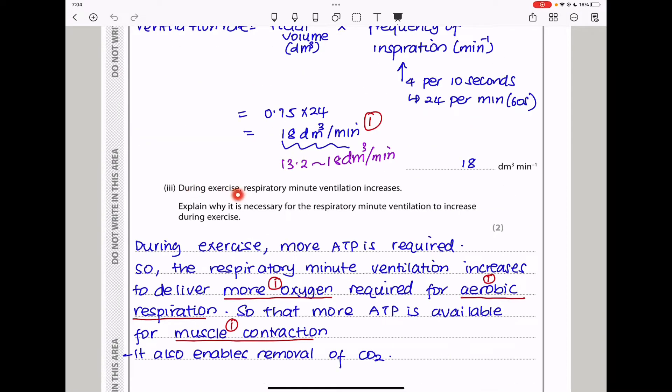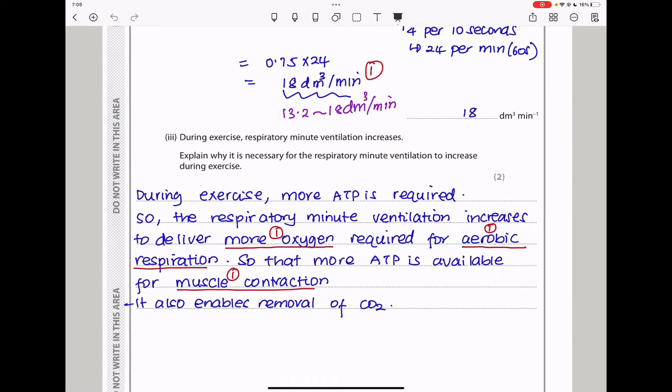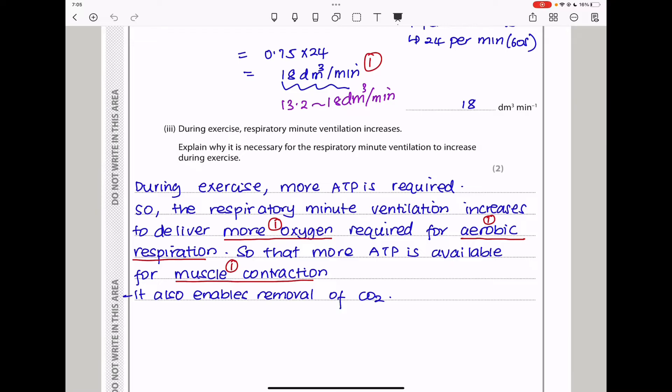Down here they say, during exercise, respiratory minute ventilation increases. Explain why it is necessary for the respiratory minute ventilation to increase during exercise. During exercise, muscle contraction occurs and this requires a lot of ATP. So more oxygen has to be supplied for aerobic respiration to occur in order for sufficient ATP to be provided for muscle contraction to be attained. So I say during exercise, more ATP is required so that inspiratory minute ventilation increases to deliver more oxygen required for aerobic respiration so that more ATP is available for muscle contraction. It also enables the removal of carbon dioxide.